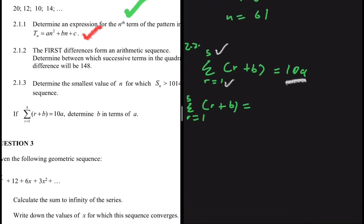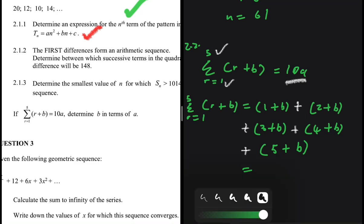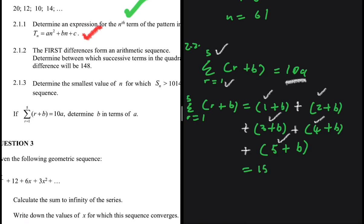When r = 1: (1 + b). When r = 2: (2 + b). Continuing through r = 5: (3 + b) + (4 + b) + (5 + b). Summing the numbers: 1 + 2 + 3 + 4 + 5 = 15. Summing the b terms: 5b. So the total sum is 15 + 5b. Setting this equal to 10a gives 15 + 5b = 10a.